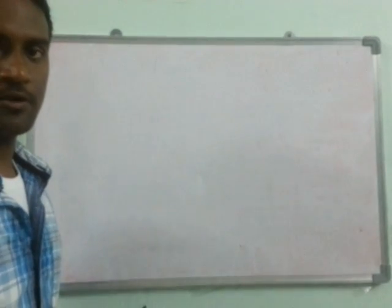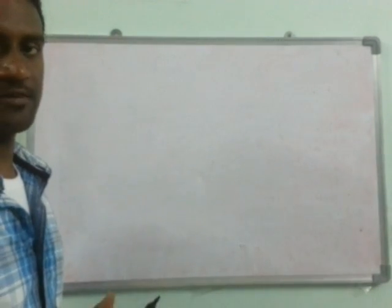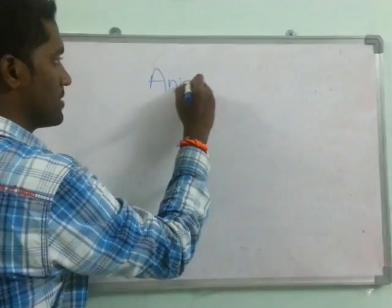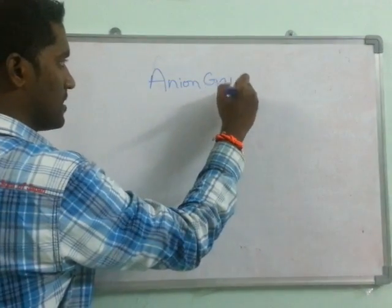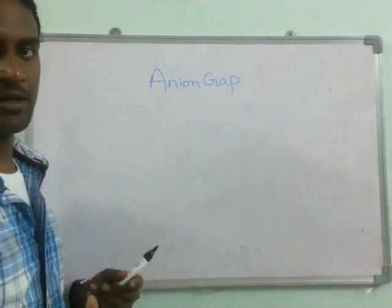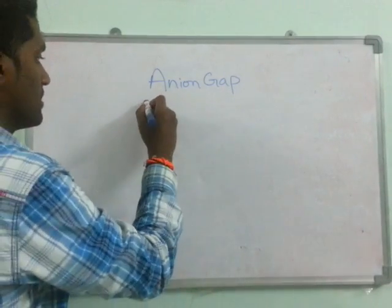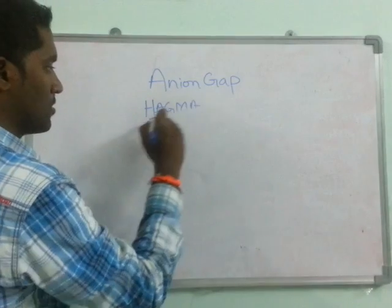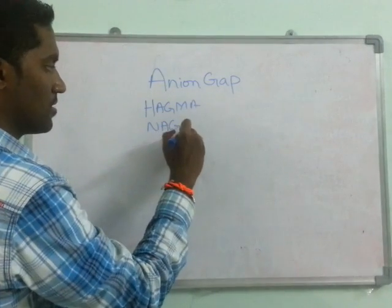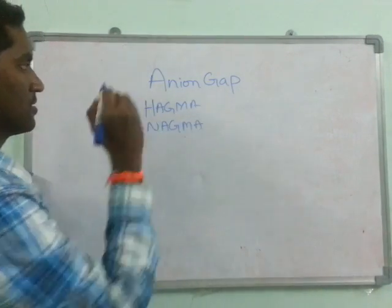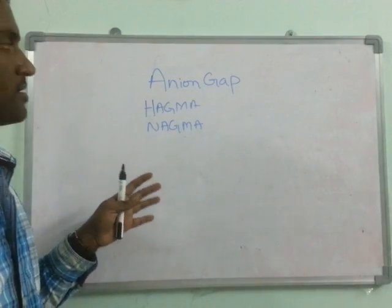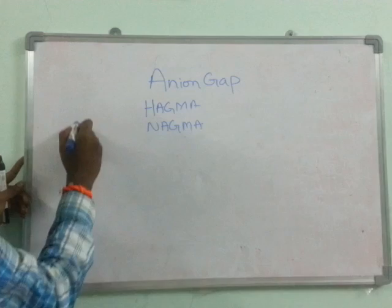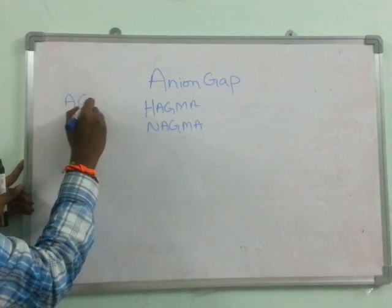Good evening friends. Today we are going to discuss about a concept in ABG that is regarding anion gap. Important things in anion gap are: what is anion gap, how is it measured, what is high anion gap metabolic acidosis, and what is normal anion gap metabolic acidosis. This is a shorter version of ABG; the rest will be dealt with next time. So first of all, what is the concept of anion gap?